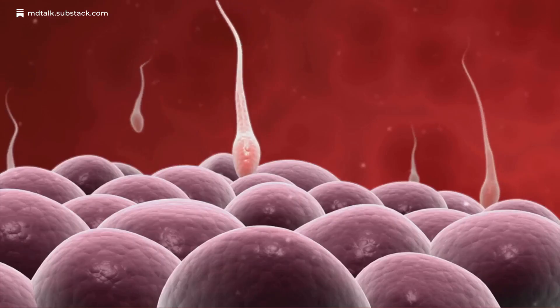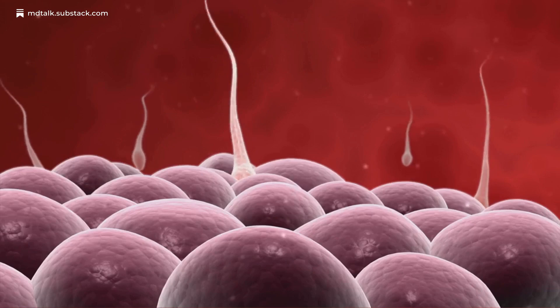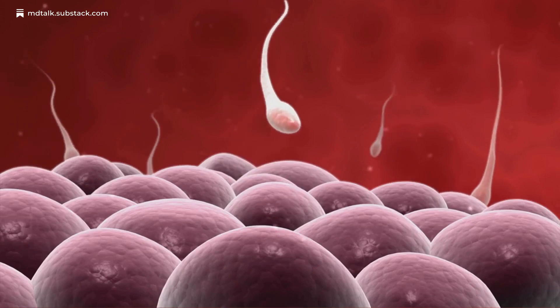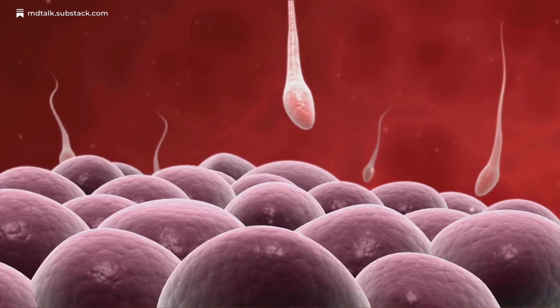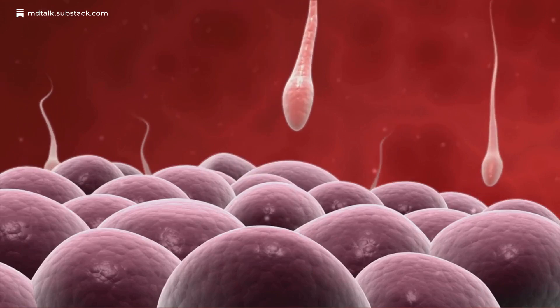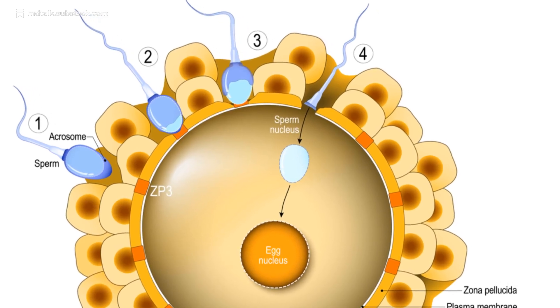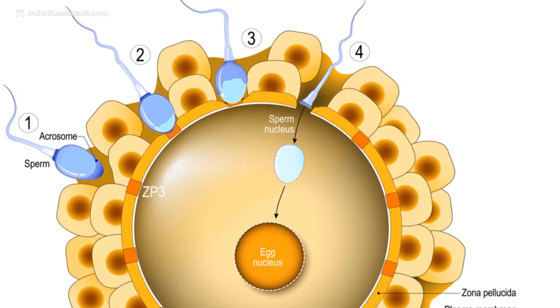Contact with the zona pellucida, specifically ZP3 glycoproteins, triggers the acrosome reaction. Enzymes like hyaluronidase and acrosin carve a path through this glycoprotein shell.